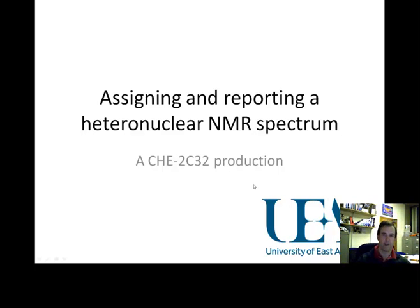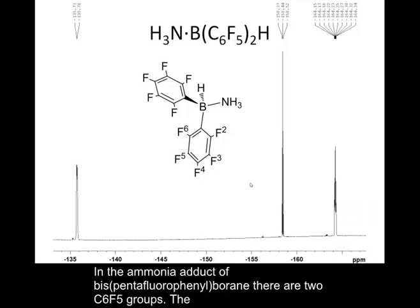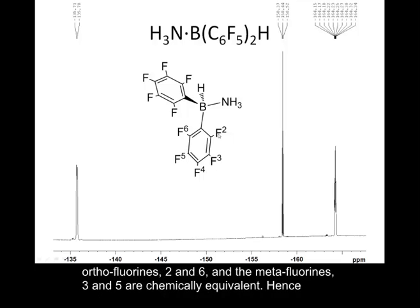Welcome to this 2C32 production on assigning and reporting a heteronuclear NMR spectrum. In the ammonia adduct of this pentafluorophenyl borane, you have two C6F5 groups. On those two C6F5 groups there are three different fluorine environments: the ortho-fluorines at the 2 and 6 positions, the meta-fluorines at the 3 and 5 positions, and the para-fluorine at position 4.